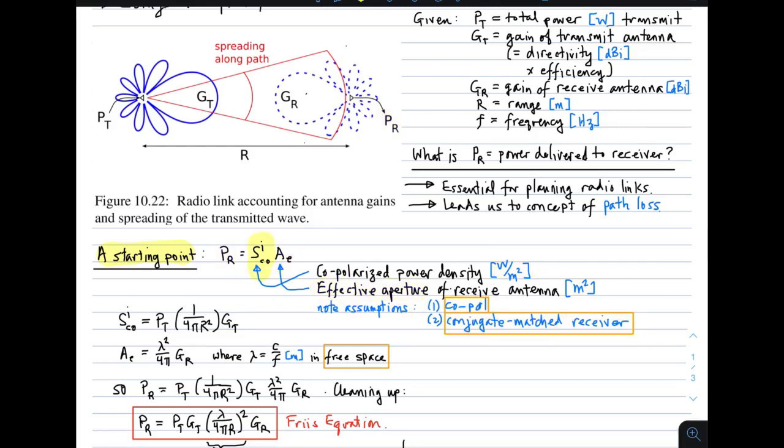Next, we note that the incident power density can be written in terms of this expression. That is, the transmitted power divided by 4 pi r squared, which describes the spreading of power in a spherical wave, times the transmit gain, which describes the increase in power density relative to an isotropic antenna. So this expression gives you the incident power density. Furthermore, we know that effective aperture can be related to receive gain by this expression. That is, the effective aperture is lambda squared, that is, wavelength squared, divided by 4 pi times the receive gain. And also recall that wavelength is just the speed of light divided by frequency in free space.